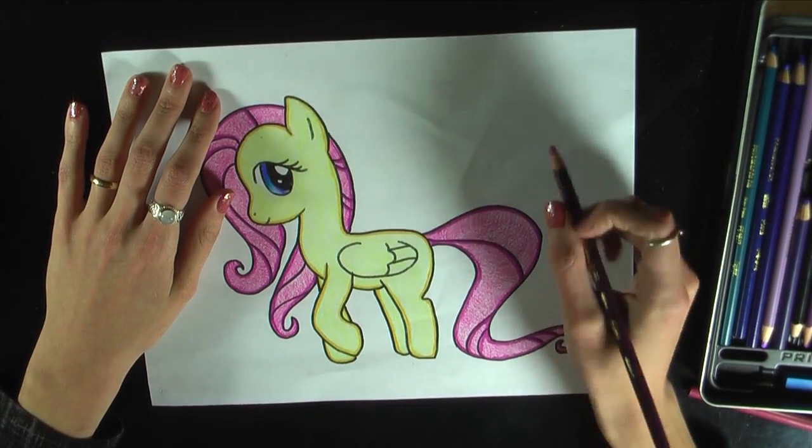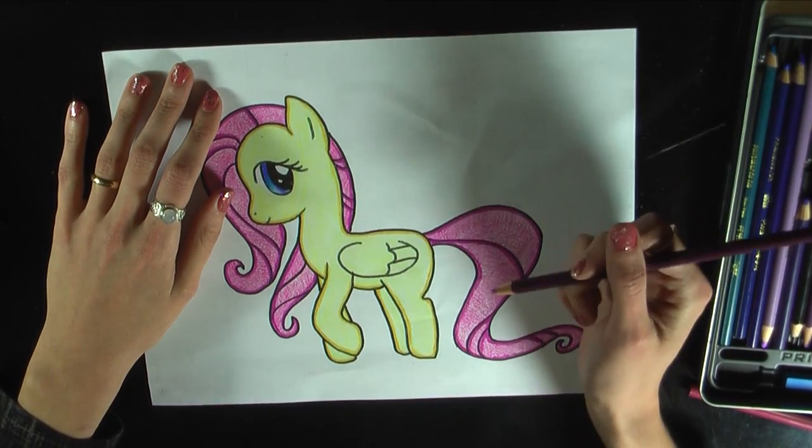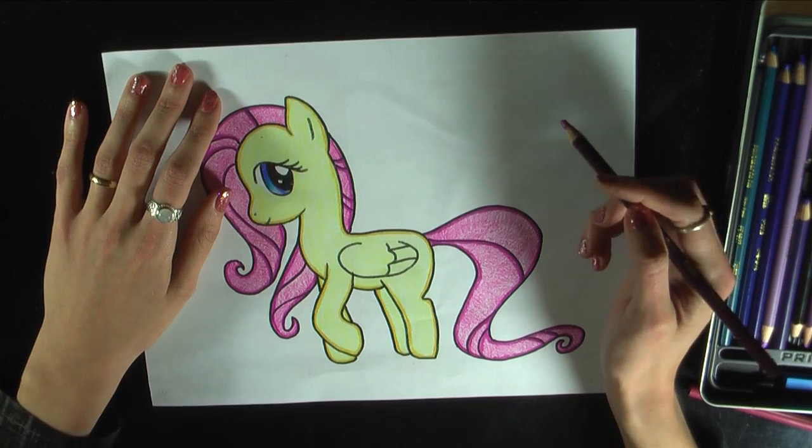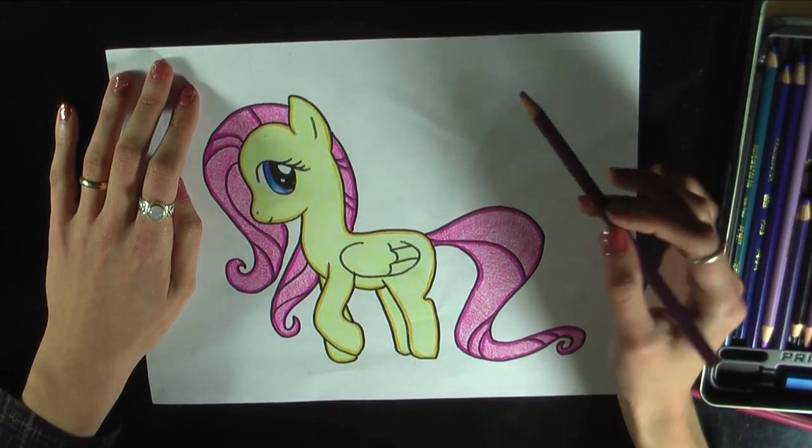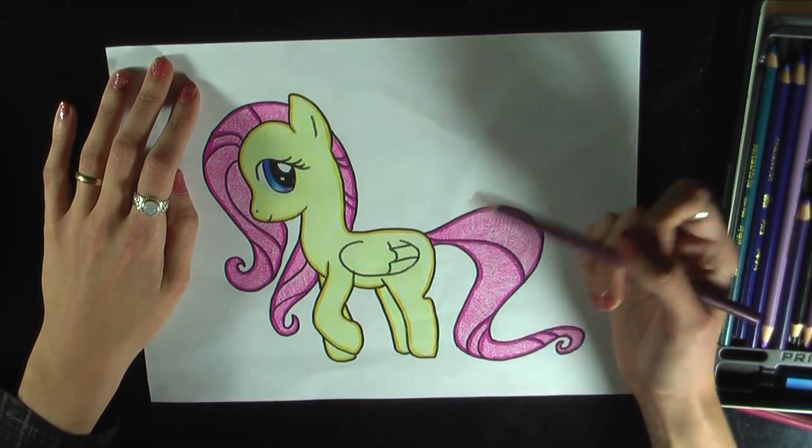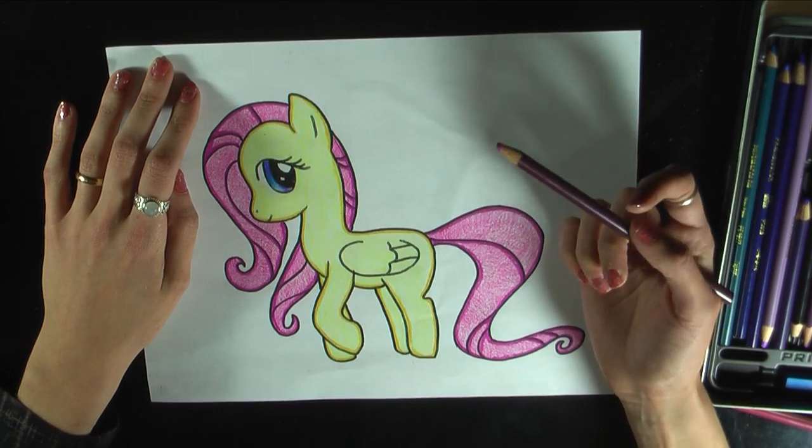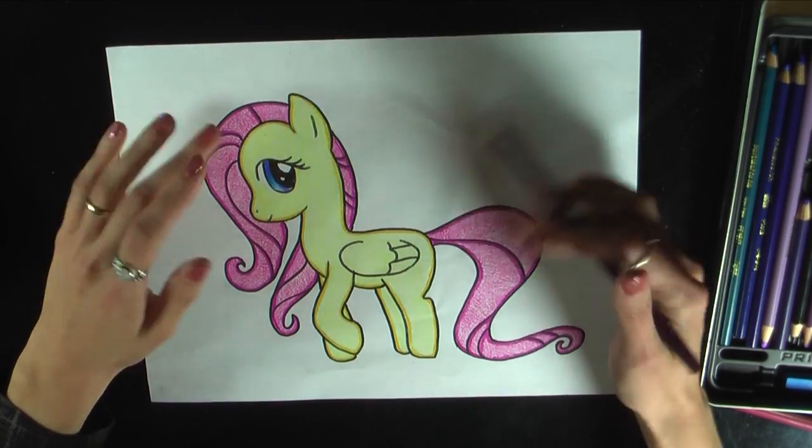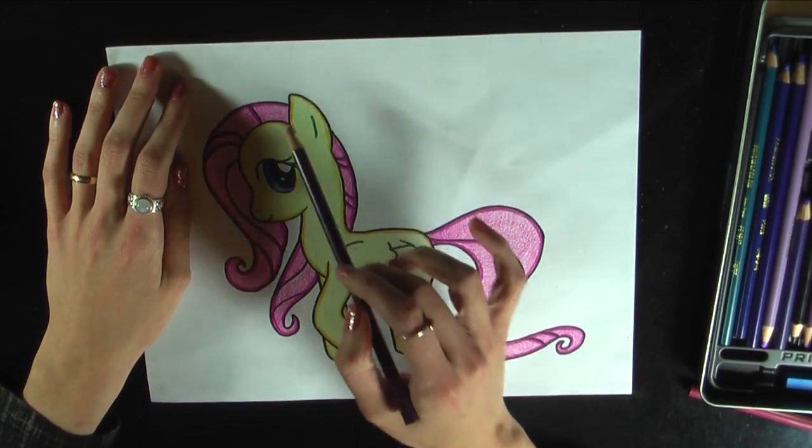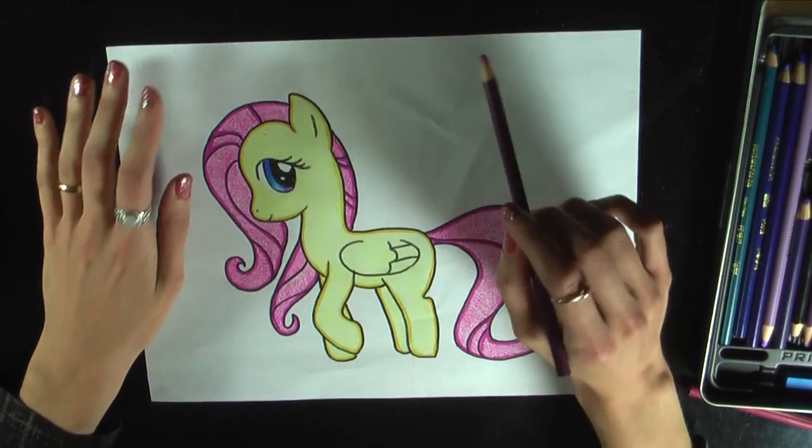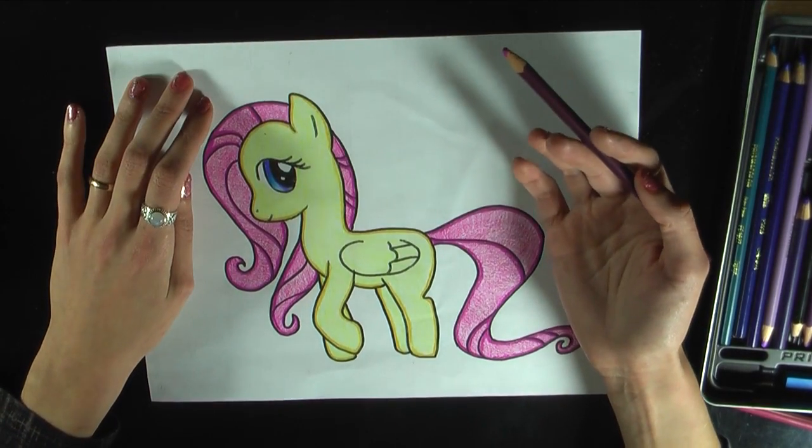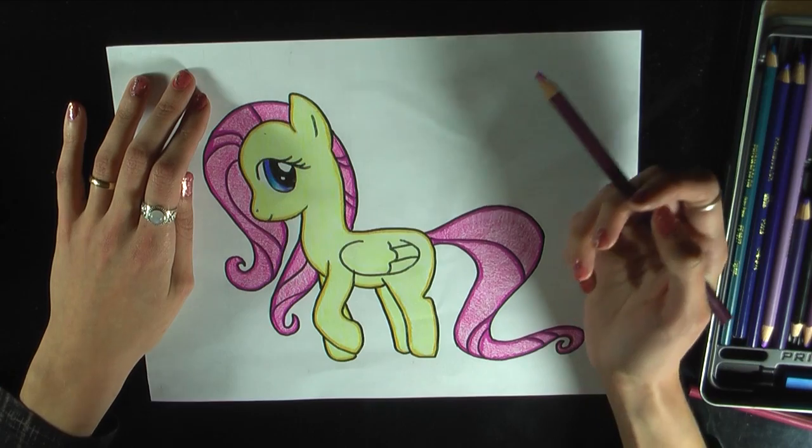Ta-da! I'm done! So all I did was I inked her and then I colored her with colored pencils. Now for those of you who are beginners, please, please, please try the grid method and let me know how it turns out for you. For those of you who aren't beginners, you don't have to draw out the grid and then draw her in the grid. You can just take a look at my original drawing and then try to reproduce the drawing from there.